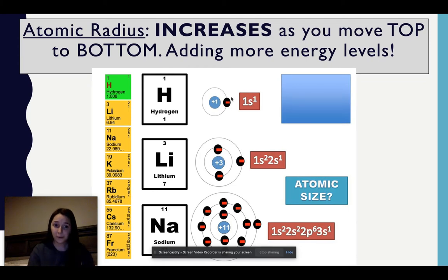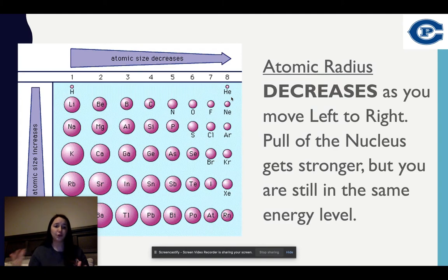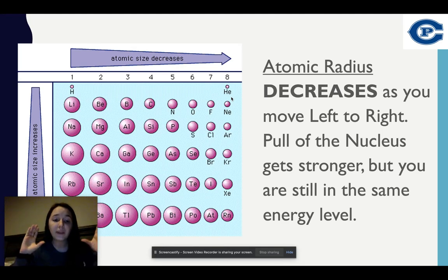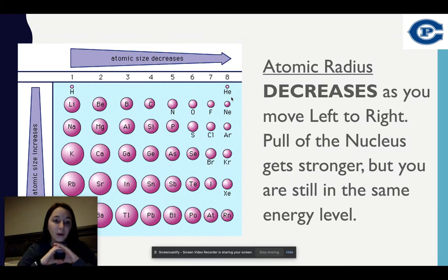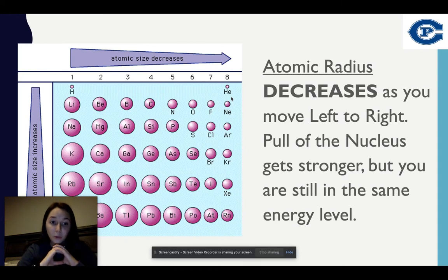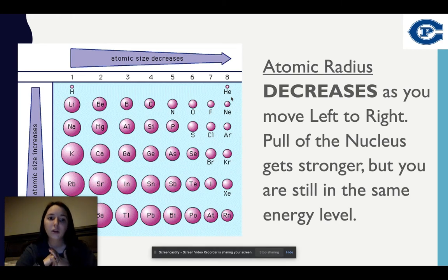What gets a little confusing is as I move left to right on the periodic table, I see a decrease in atomic radius. The reason being is that I have the same amount of energy levels, but I have an increase in valence electrons on that last shell. That negative charge is being attracted to my growing positive nucleus because I have more protons as I move left to right.